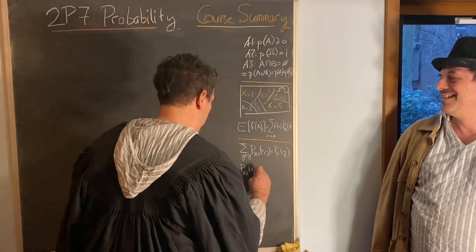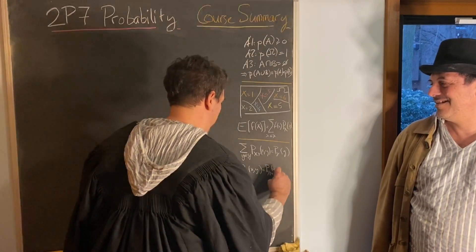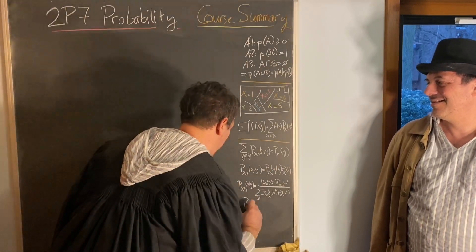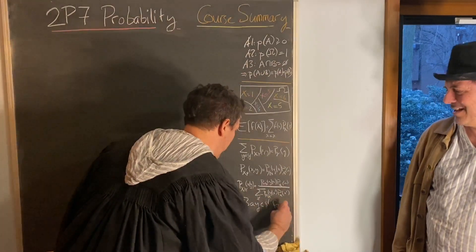The sum rule and the product rule give marginals and conditionals, and you get Bayes' formulation.